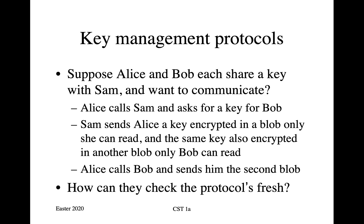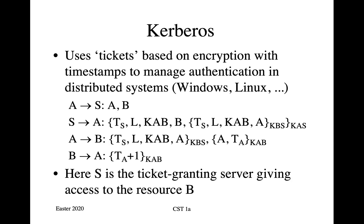So how might it work? The obvious way is that Alice calls Sam and asks for a key for Bob. Sam then sends Alice a key encrypted in a blob that only she can read, and sends the same key also encrypted in another blob that only Bob can read. Alice then calls Bob and sends him the second blob. One of the questions you might ask, having seen man-in-the-middle attacks, is how can they check that the protocol is fresh — how can they check it isn't a replay being replayed by Charlie?